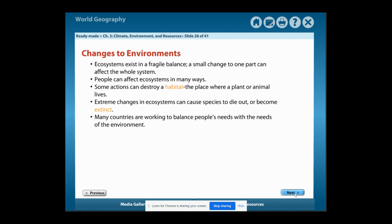A habitat is a place where a plant or animal lives. Extreme changes in ecosystems can cause a species to die out or become extinct. Many countries are working to balance people's needs with the needs of the environment.